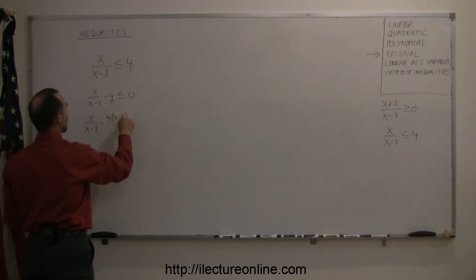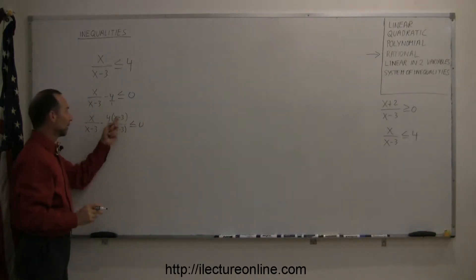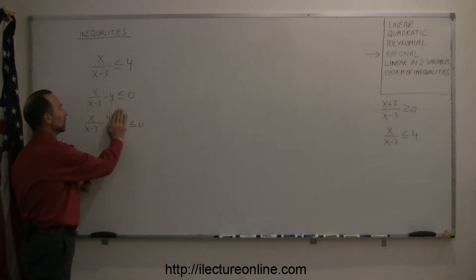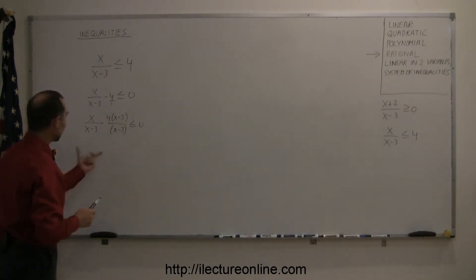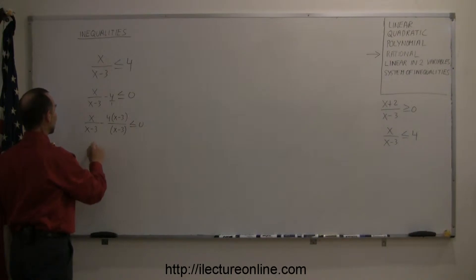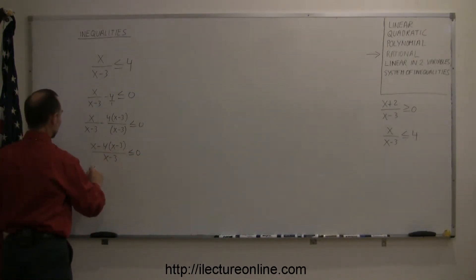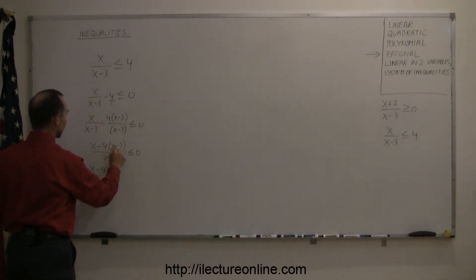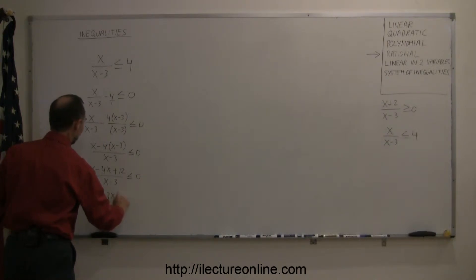So this is 4 times x minus 3, over 1 times x minus 3. As a quick check, you can always divide x minus 3 into x minus 3, which equals 1, and you end up with what you started with. Now that everything is written over a common denominator, you can write this as x minus 4 times x minus 3, over x minus 3, is less than or equal to zero. Multiplying this out: x minus 4x, and minus 4 times minus 3 is plus 12, divided by x minus 3, is less than or equal to zero. Combining like terms, you get minus 3x plus 12, divided by x minus 3, is less than or equal to zero.